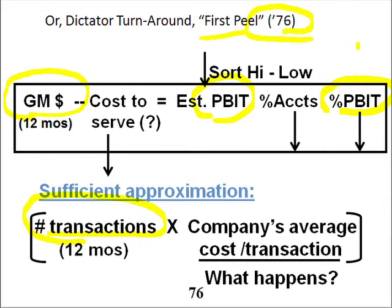The key was I ranked all the customers from high to low by PBIT. At the top of the report, the only way you could be there was for the margin dollars to be huge and the cost to serve to be very small, meaning very large average order sizes and low transaction counts — probably a winner. At the bottom, you'd have much lower margin dollars and much higher transactional activity — probably a loser.